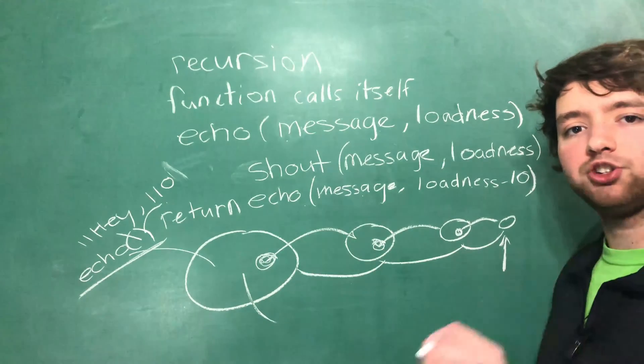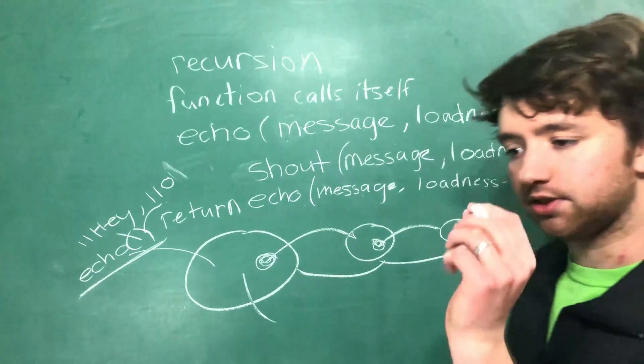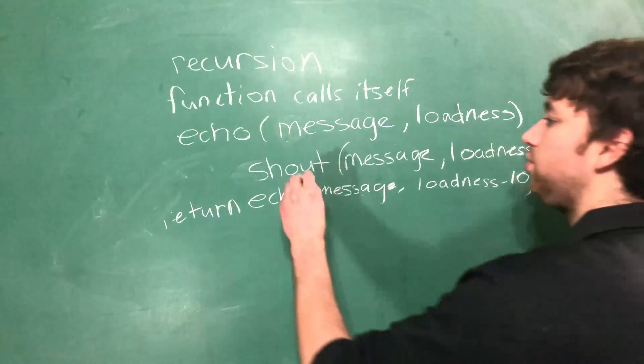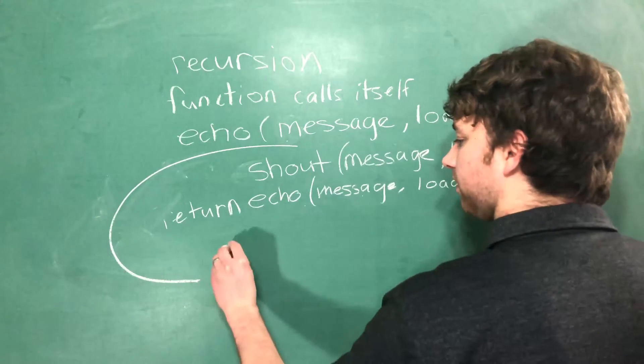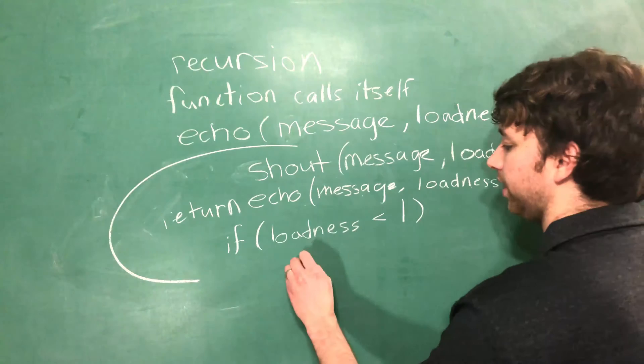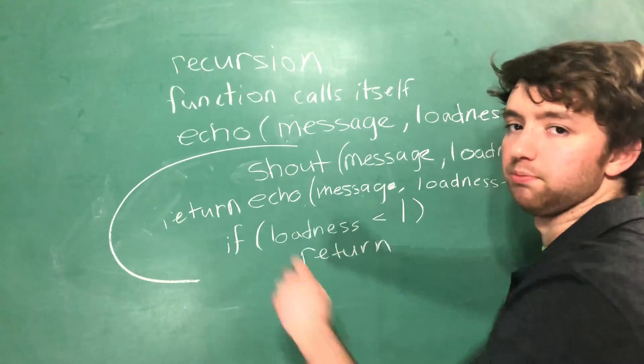So we need a condition to stop the calling of a smaller version. And that's at the smallest piece. So you can think of the smallest volume that is allowed. So to do that, we just need to add a line right here that goes something like this. If loudness is less than one, return. And that's going to trigger traversing back up the call stack.